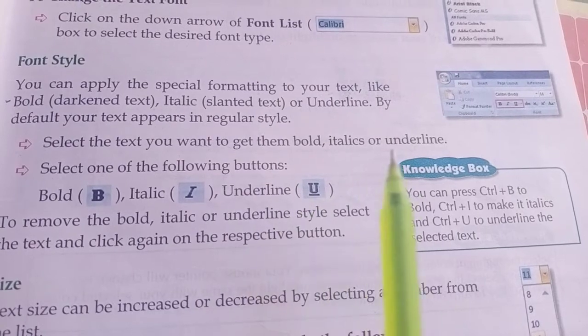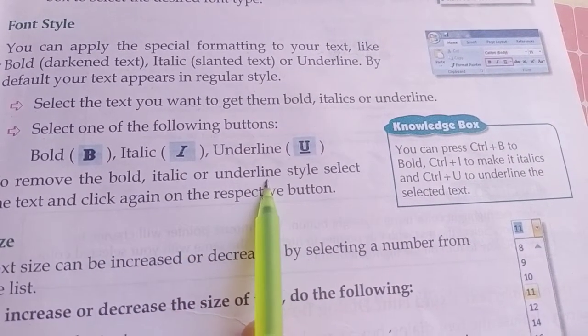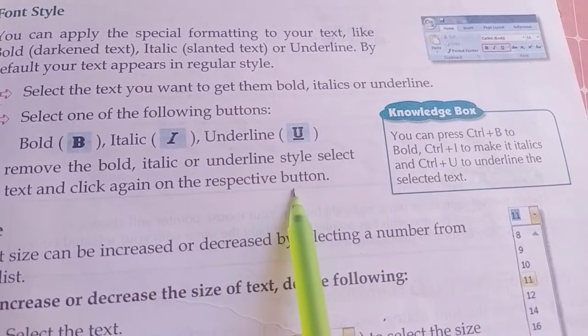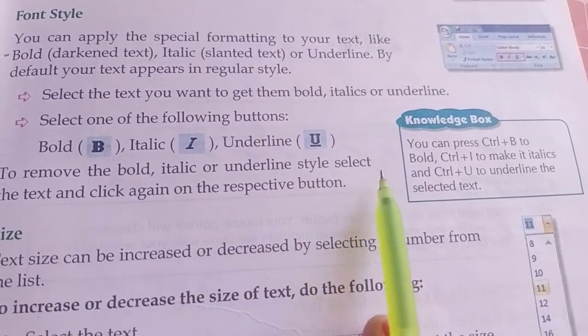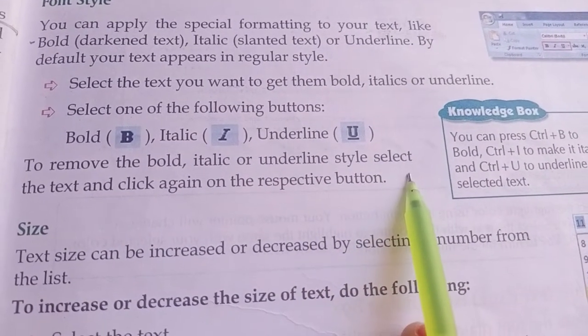To remove the bold, italic, or underline style, select the text and click again on the respective button.